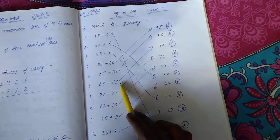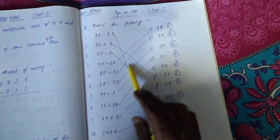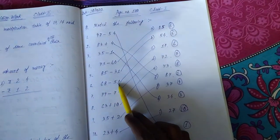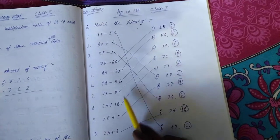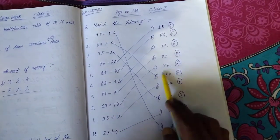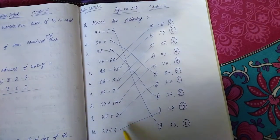85 minus 31, 54 is the answer. 68 minus 51, 17 is the answer. 79 minus 7, 72 is the answer. 63 plus 10, 73. 35 plus 2, 37. 23 plus 4, 27.